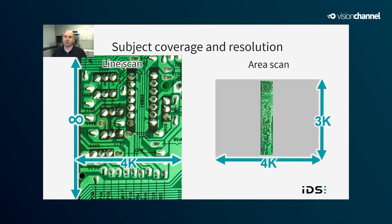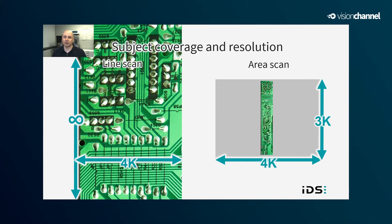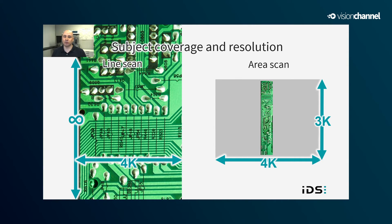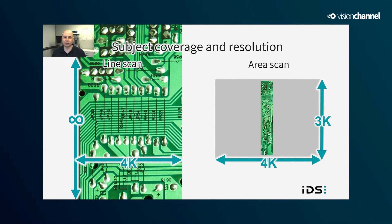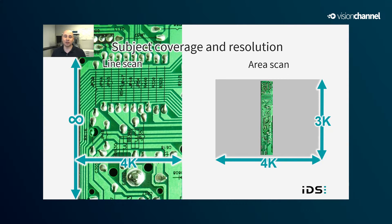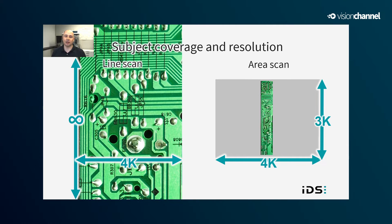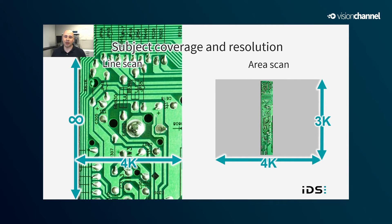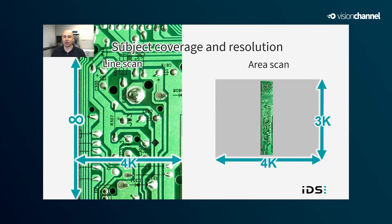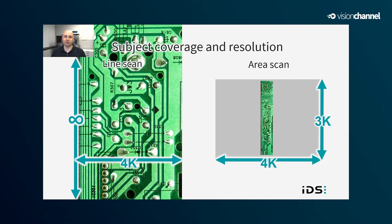Area scan imaging creates images with the aspect ratio given by the sensor dimensions, so it's generally better suited for capturing subjects with more standard aspect ratios. Line scan imaging is great for very long or even continuous subjects, because you only need to fit one of the subject's dimensions into the sensor's field of view, then scan in the other dimension until full coverage is achieved. Theoretically, you can scan indefinitely and just continually process the image data.